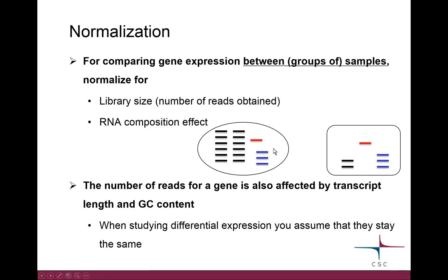Let's say we have two cell types — the round one and the square one — and we want to compare the expression level of genes. These cells are super simple: they express only three different genes — red, blue, and black — in both types. But the round cell expresses lots of the black gene, whereas the levels of the other genes are the same.